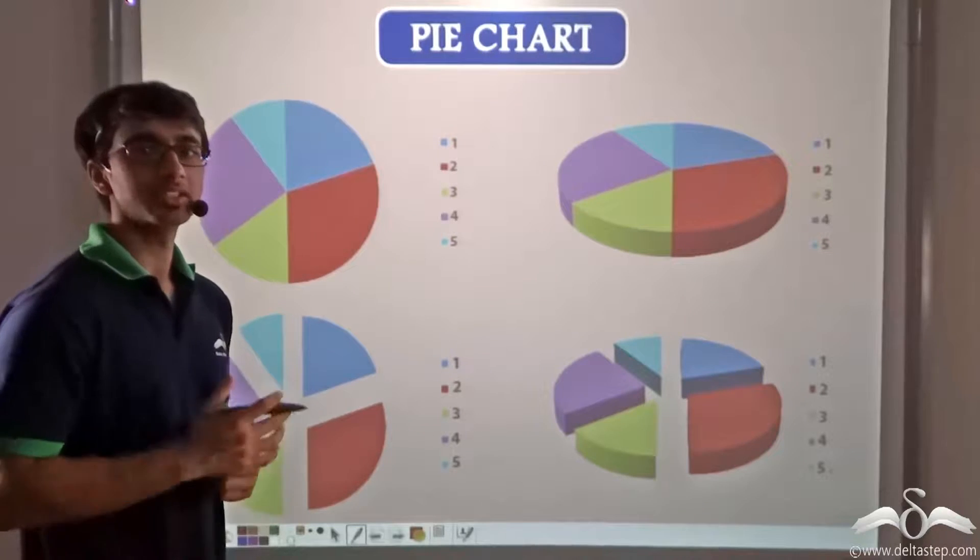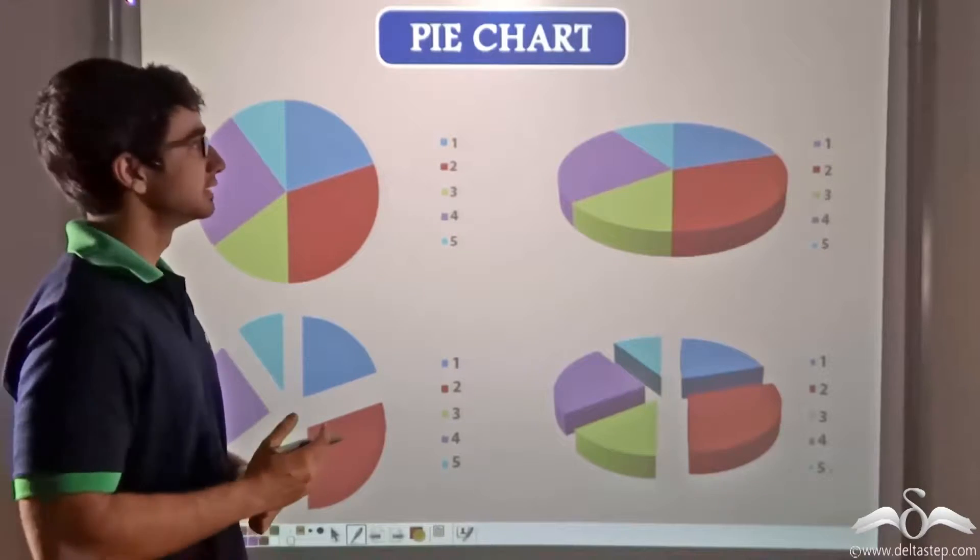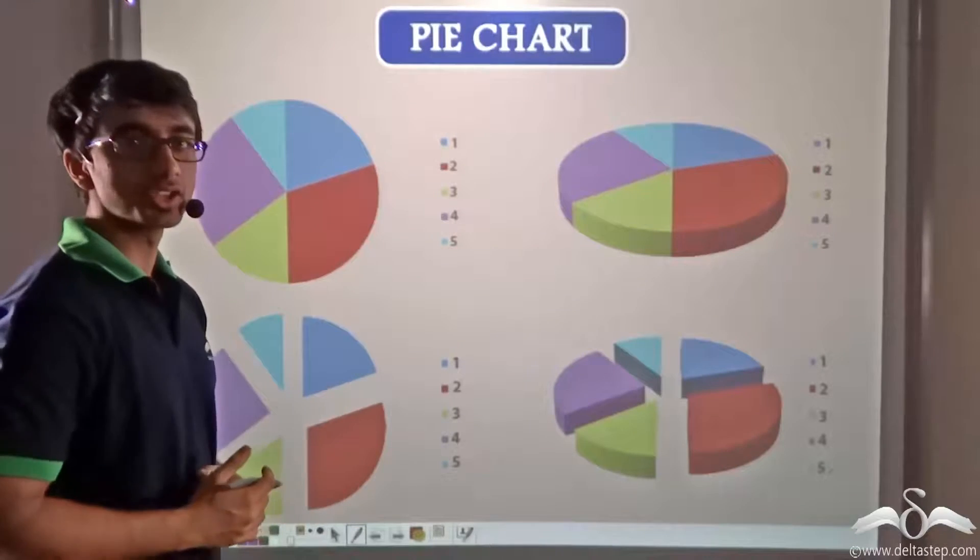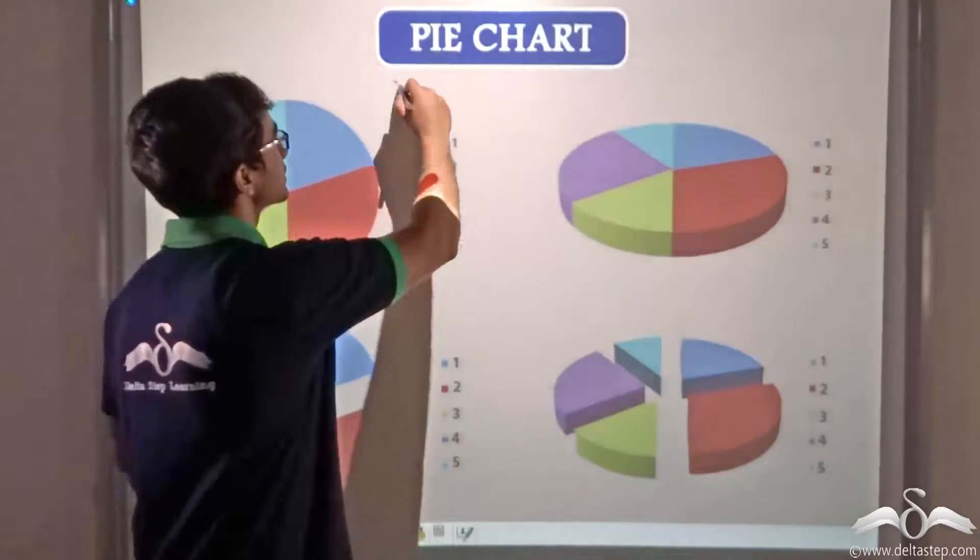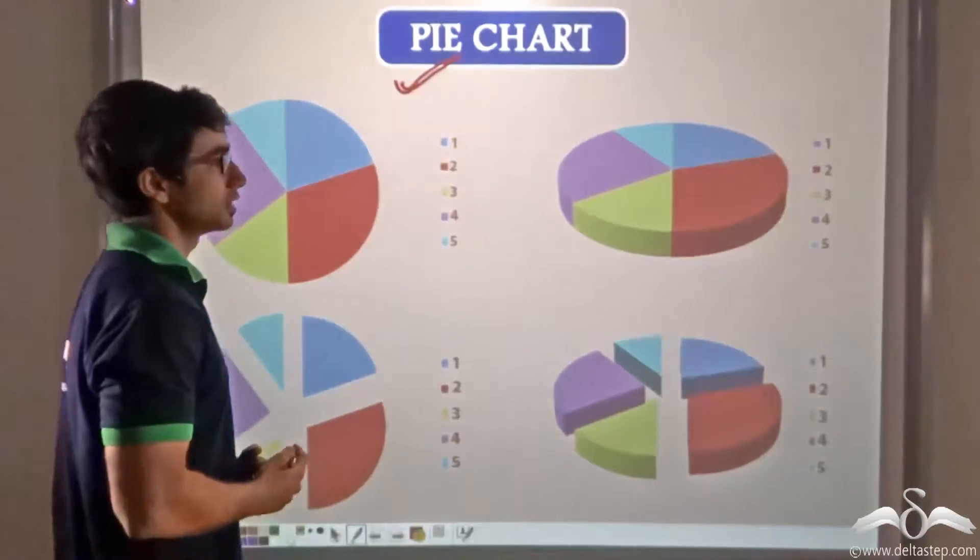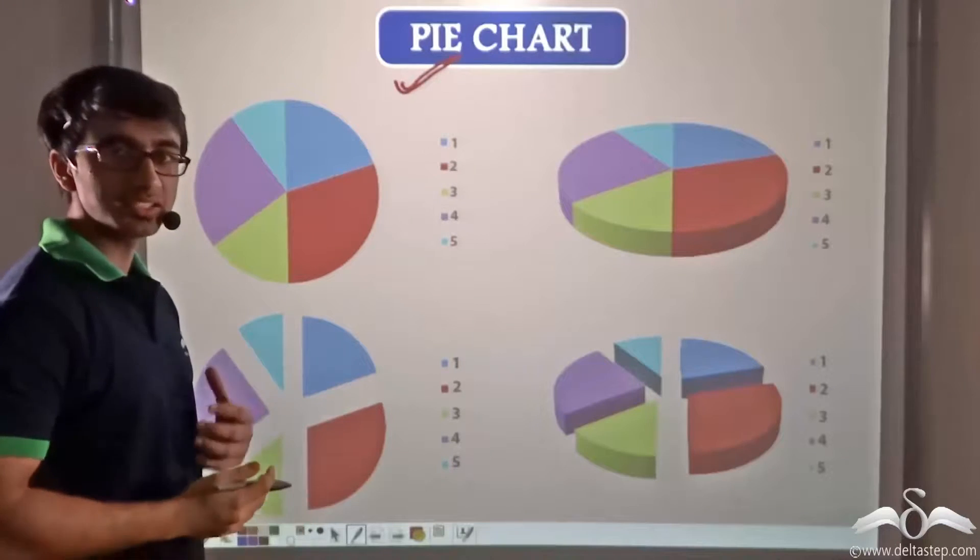You must have often come across representations of data that look like the pictures you can see on the screen. These representations are also known as pie charts. Pie charts can be of various types as you can see.